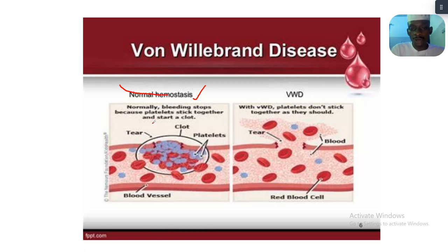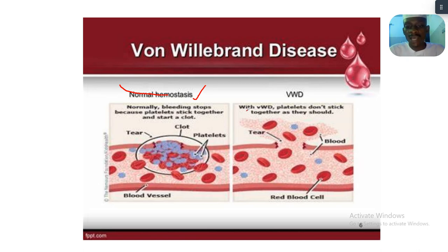In normal blood clotting, bleeding stops because platelets stick together to start a clot. Platelets flowing through a wound or cut on the skin aggregate together to stop bleeding. With von Willebrand disease, however, your platelets don't stick together as they should.